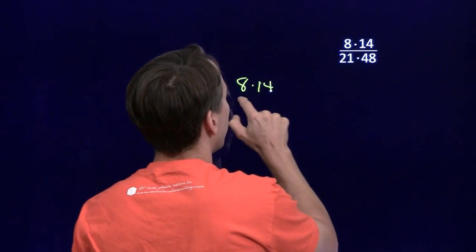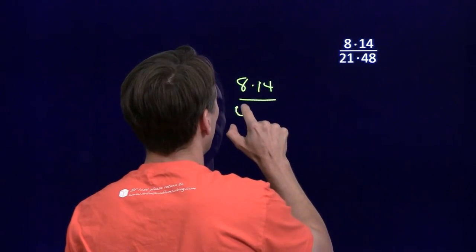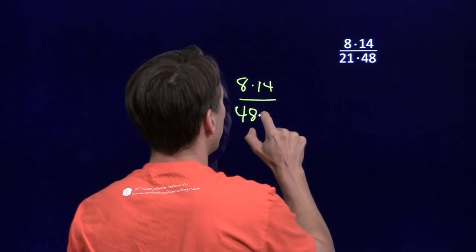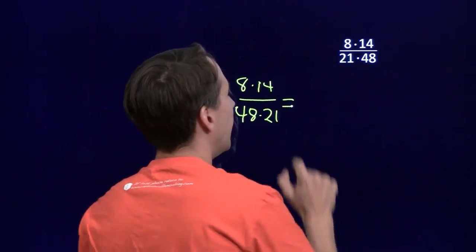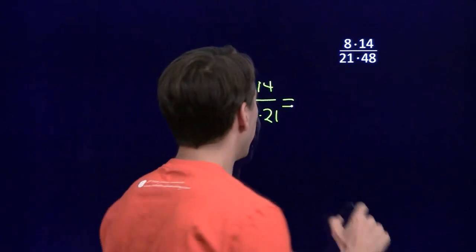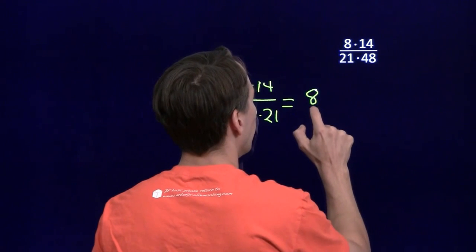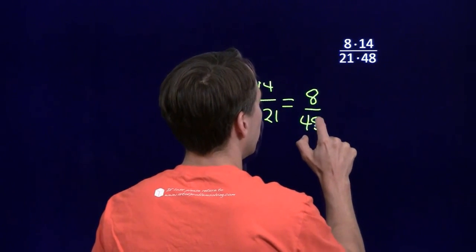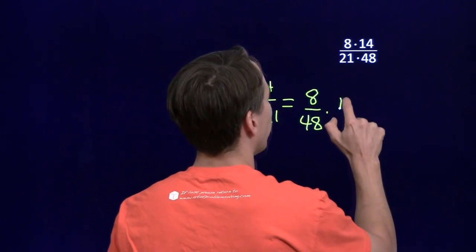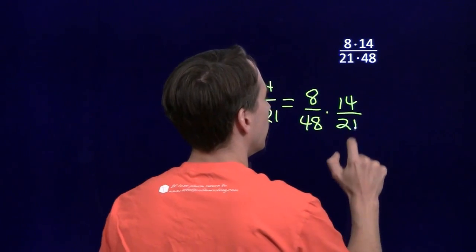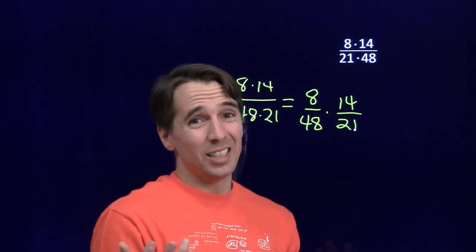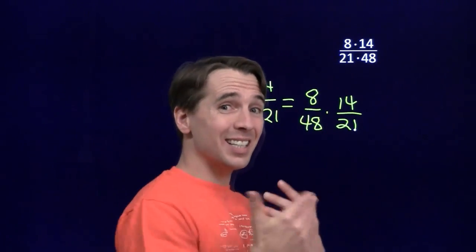We start off by just rewriting the order of the denominator, 48 times 21. And that allows us to break this into the product of two fractions that we know we can simplify. 8 over 48 times 14 over 21. We see 8 over 48. 8 is just 1 times 8. 48 is 6 times 8. We cancel out those 8s.